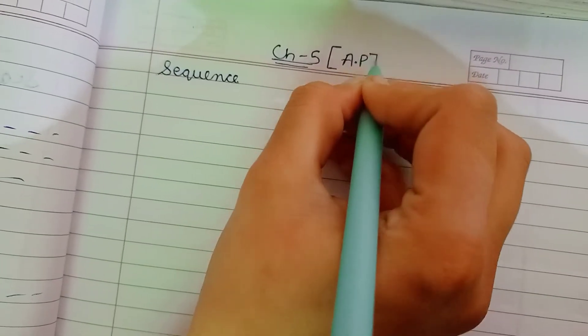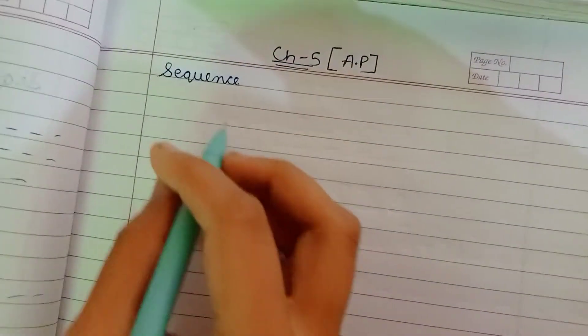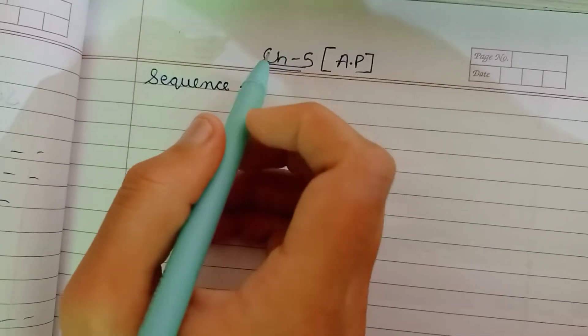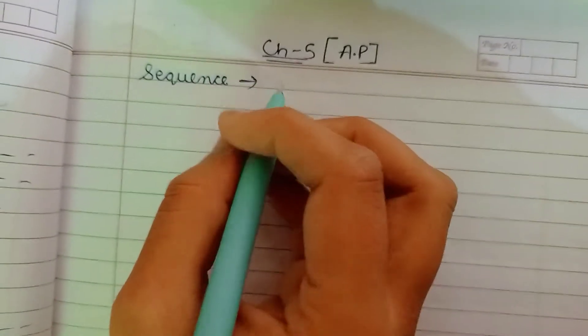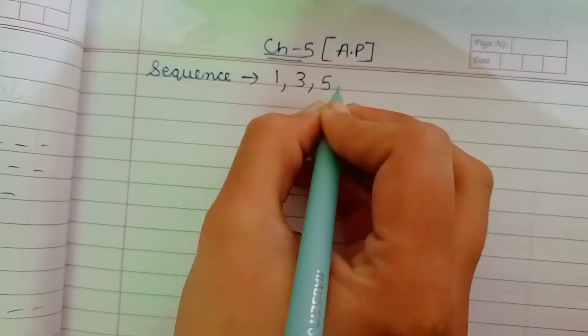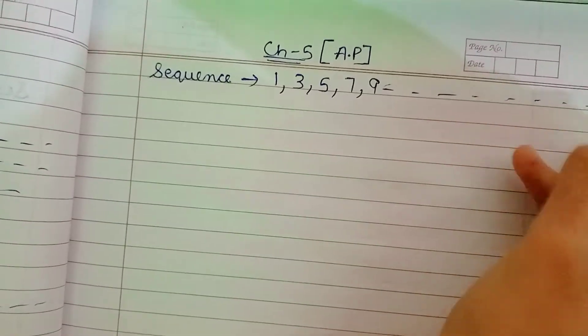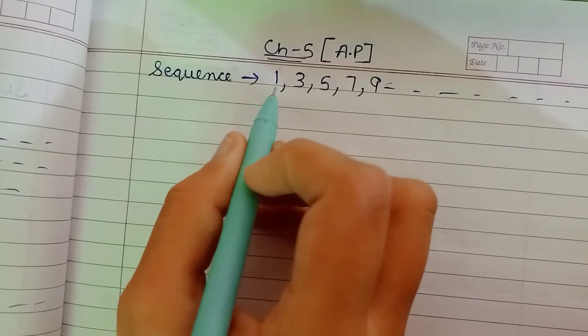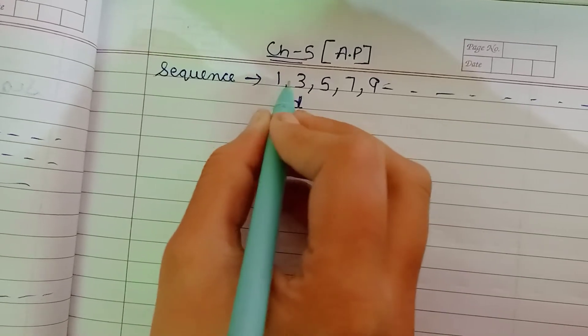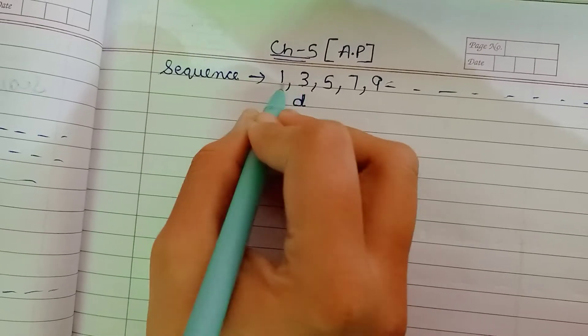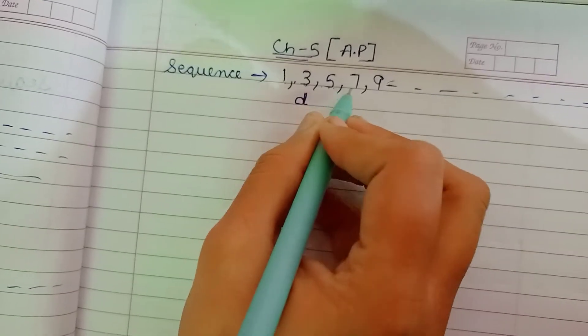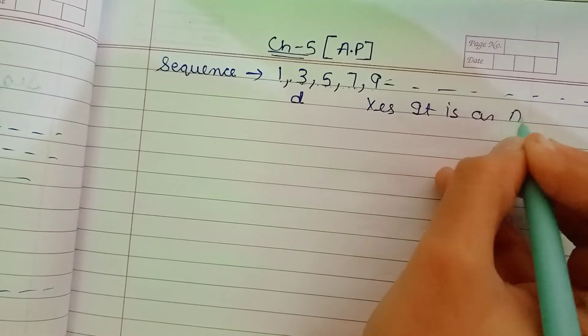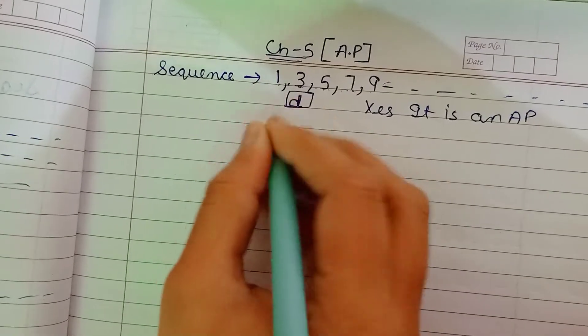Now let's start our topic. Today we will discuss chapter number 5 which is called arithmetic progression, which we can also write as AP. First let's talk about sequence. What happens? An arrangement of numbers in a definite order according to some definite rule is called a sequence. I will explain with an example like 1, 3, 5, 7, 9. Here we will see what happens if this is AP or not. So first let's look at the common difference which we write as d.